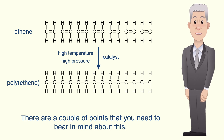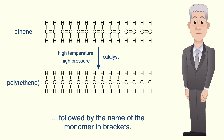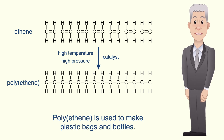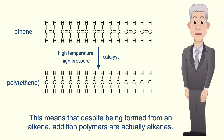There are a couple of points to bear in mind about this. Firstly, the polymer is named by using the word poly, followed by the name of the monomer in brackets. So when we polymerize ethene, we make polyethene. Polyethene is used to make plastic bags and bottles. Secondly, the product polymer has no double bonds in the carbon backbone. So this means that despite being formed from an alkene, addition polymers are actually alkanes.